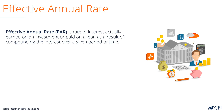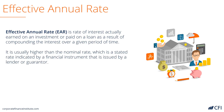Effective annual rate is the interest rate that's actually earned or paid on a loan or investment, and it takes into account the effect of compounding. For this reason, it's typically higher than the nominal rate or the stated rate.